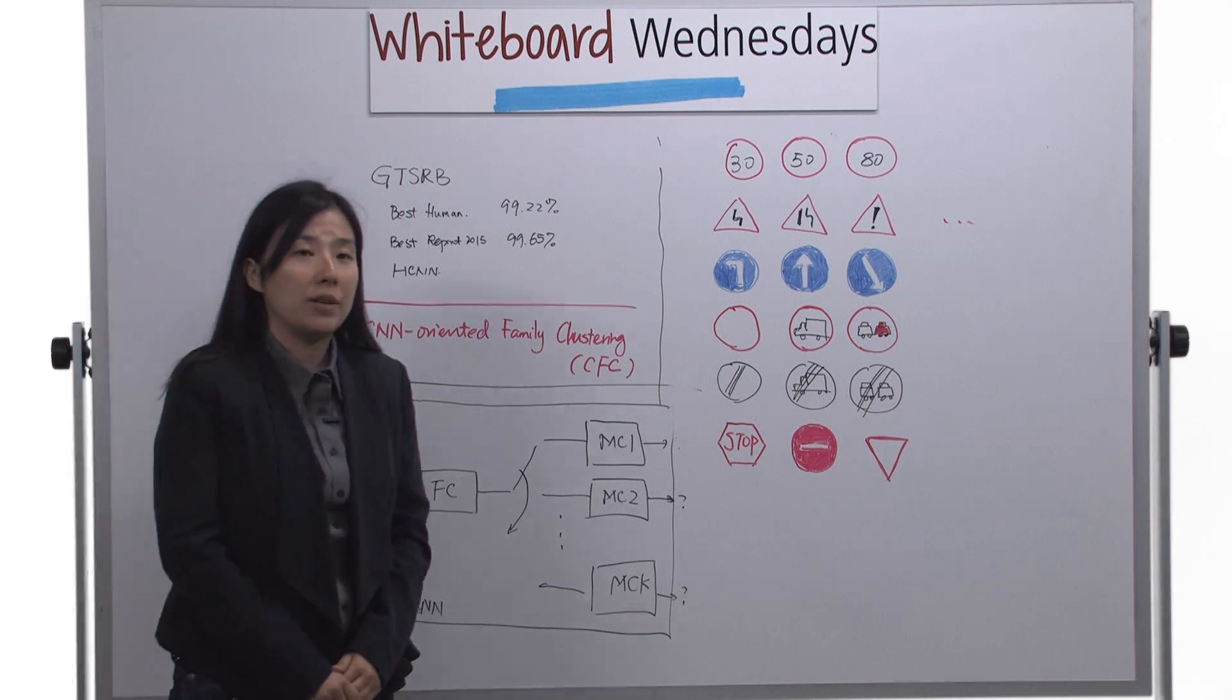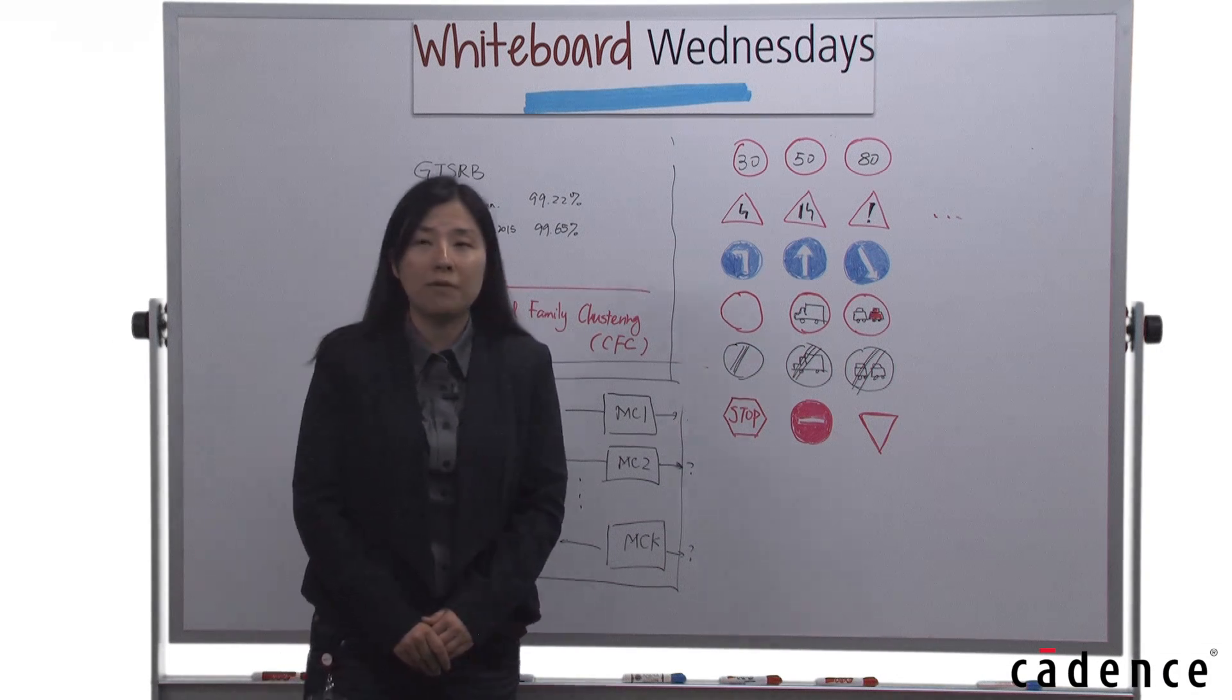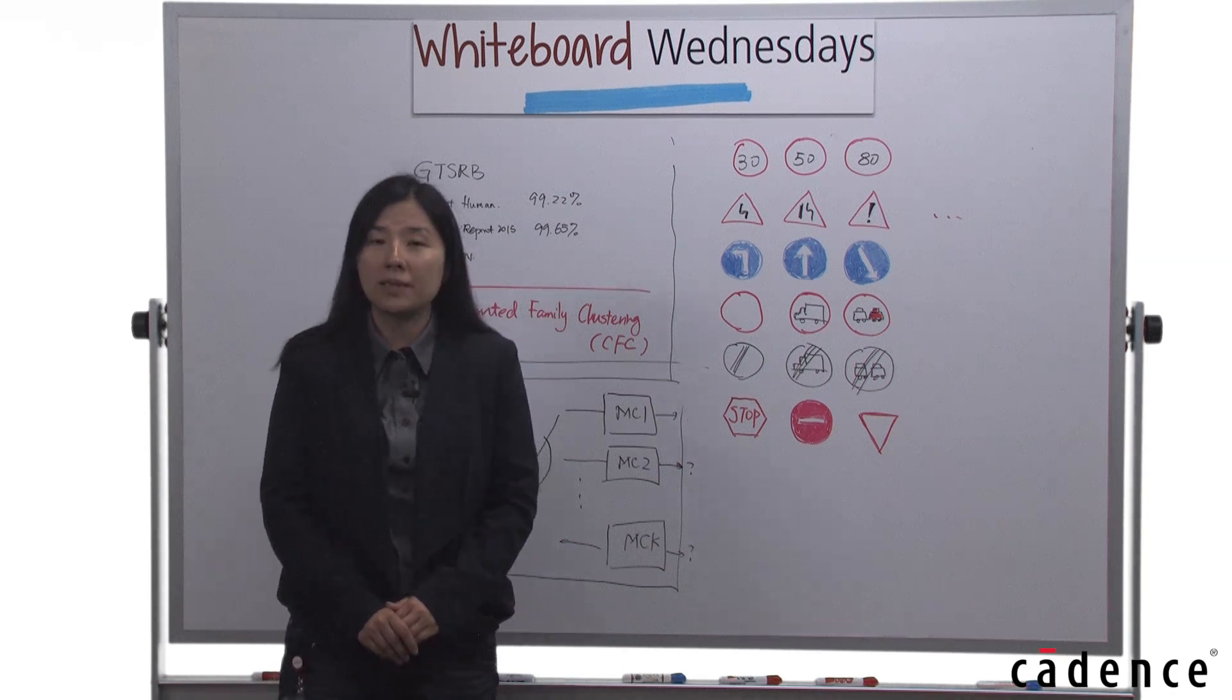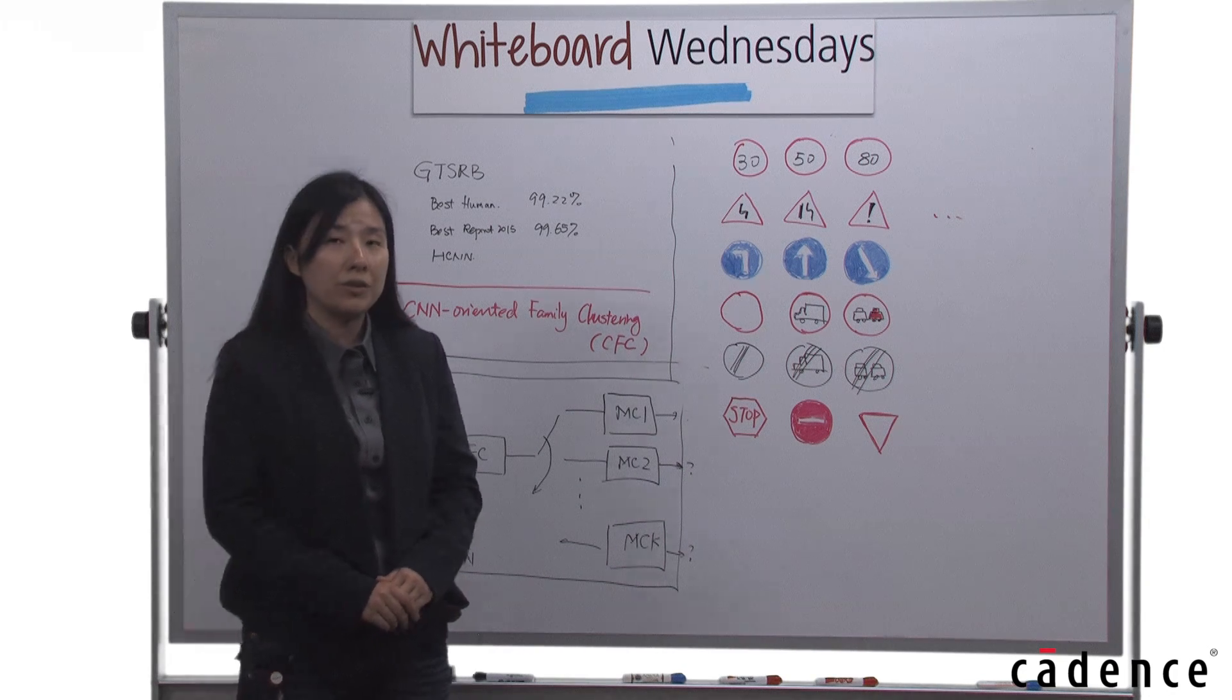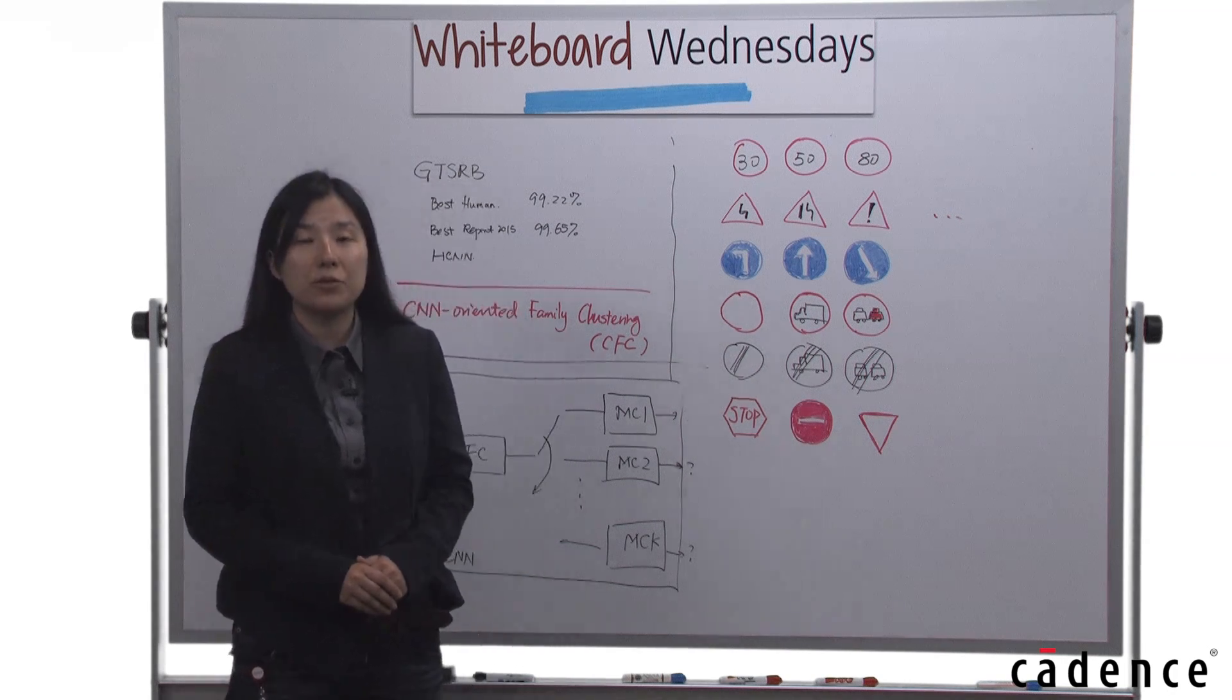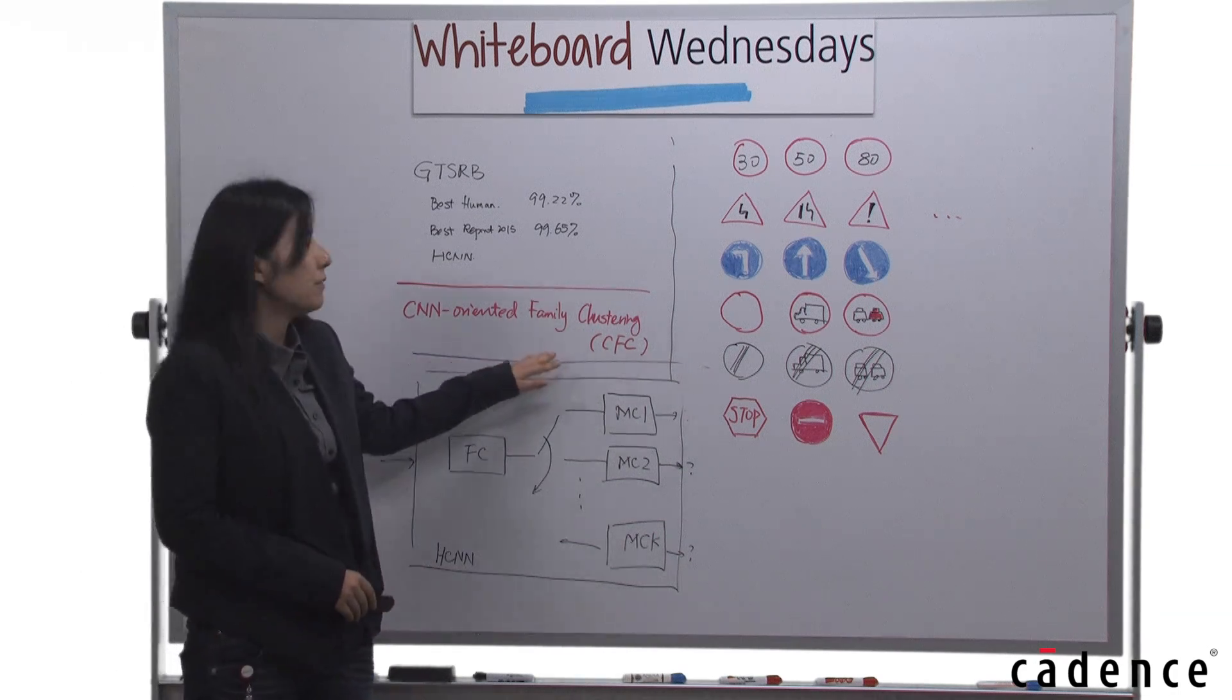As we learned in our last Whiteboard Wednesday, there are six predetermined families for human beings, but these might not be the families seen by a CNN. So we decided to let the CNN determine how many families it wants and which members should be grouped together. This is what we call CNN-oriented family clustering.